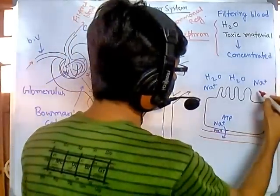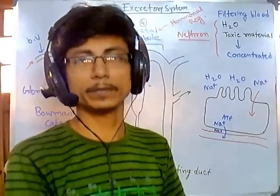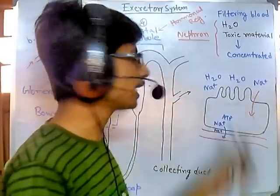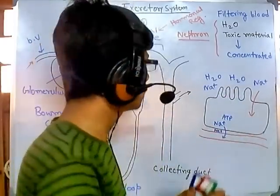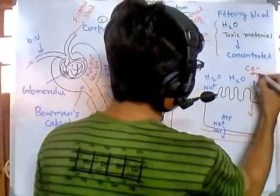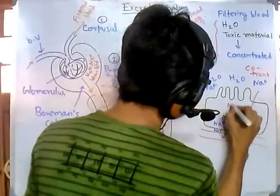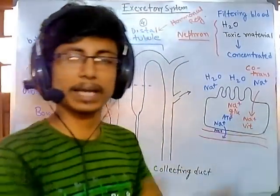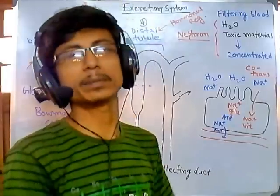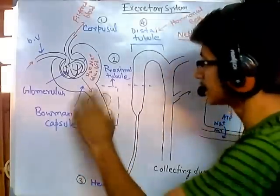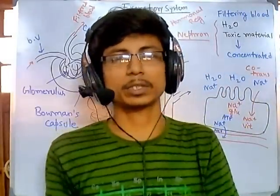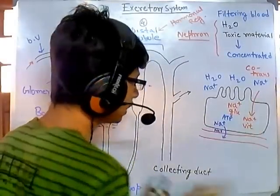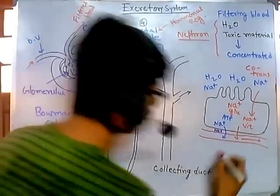Because there is less sodium inside the cell, sodium follows the concentration gradient and enters the cell — but sodium cannot enter by normal diffusion; it requires channels. In this case, sodium uses co-transport channels, entering the cell along with glucose or vitamins. So not only is sodium taken up, but glucose and vitamins are also taken inside the cell. Everything — sodium, glucose, vitamins — is then sent to the blood vessel, completing reabsorption.